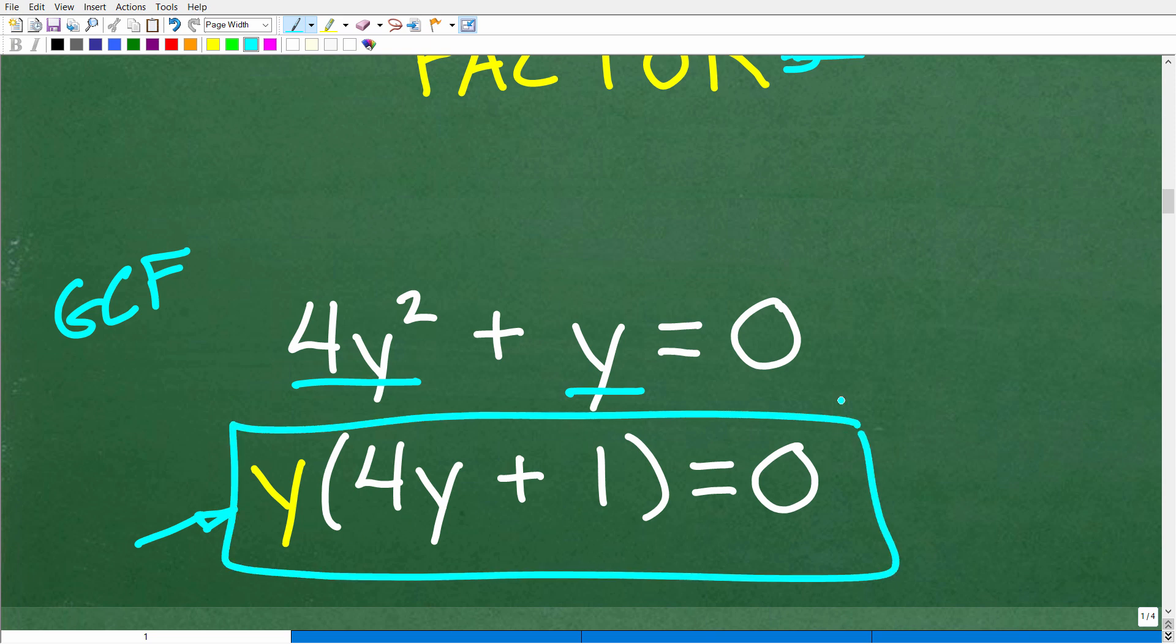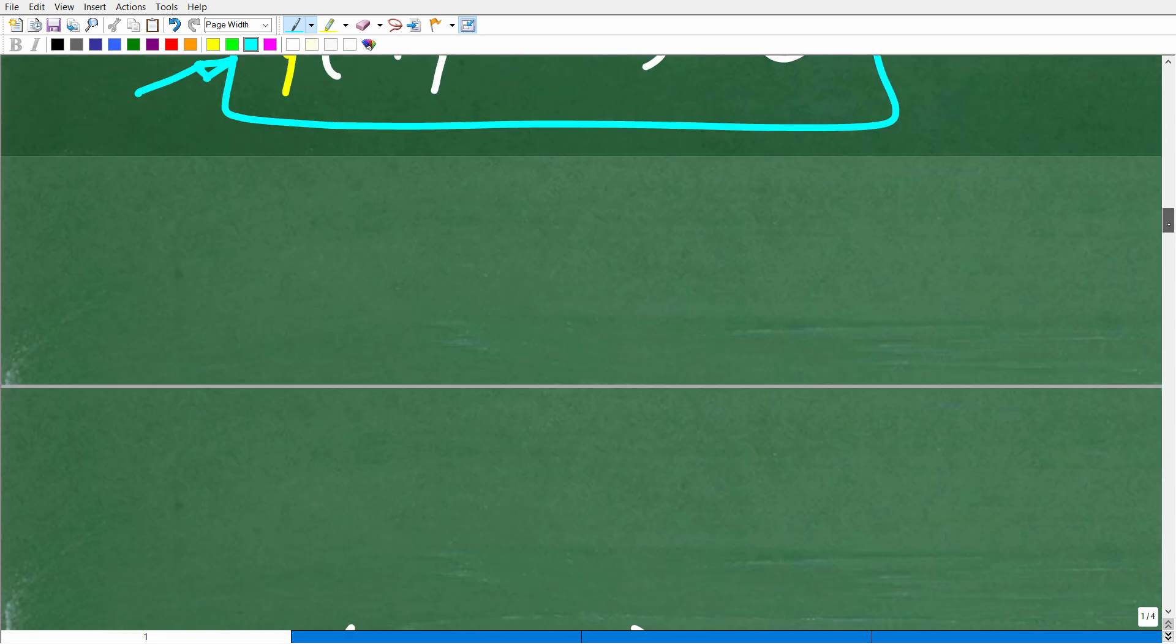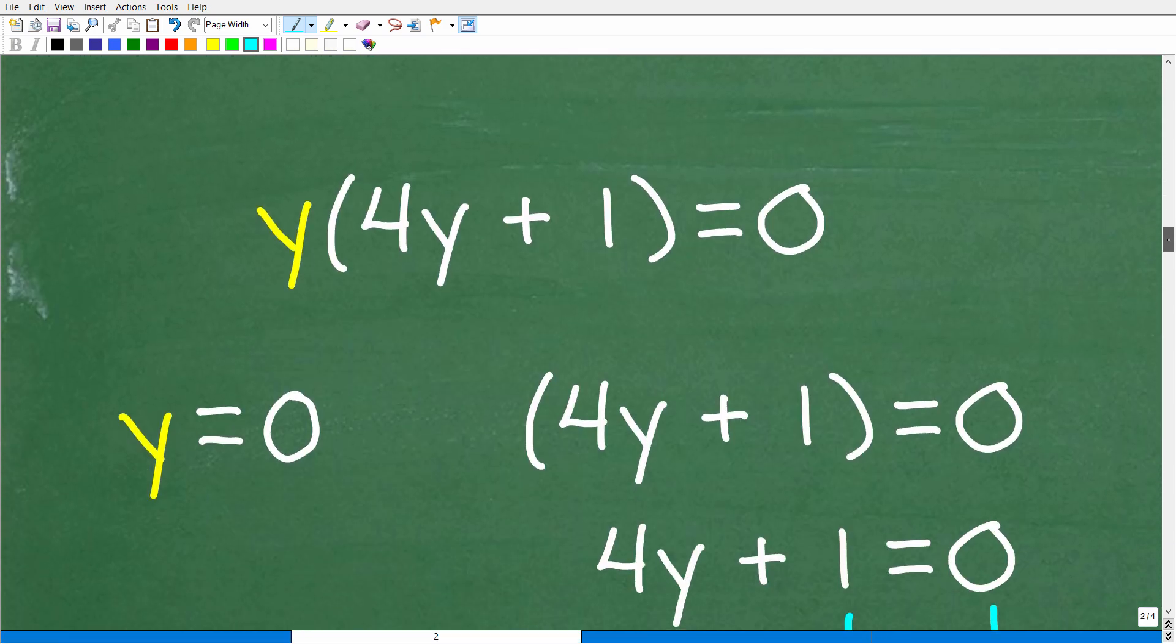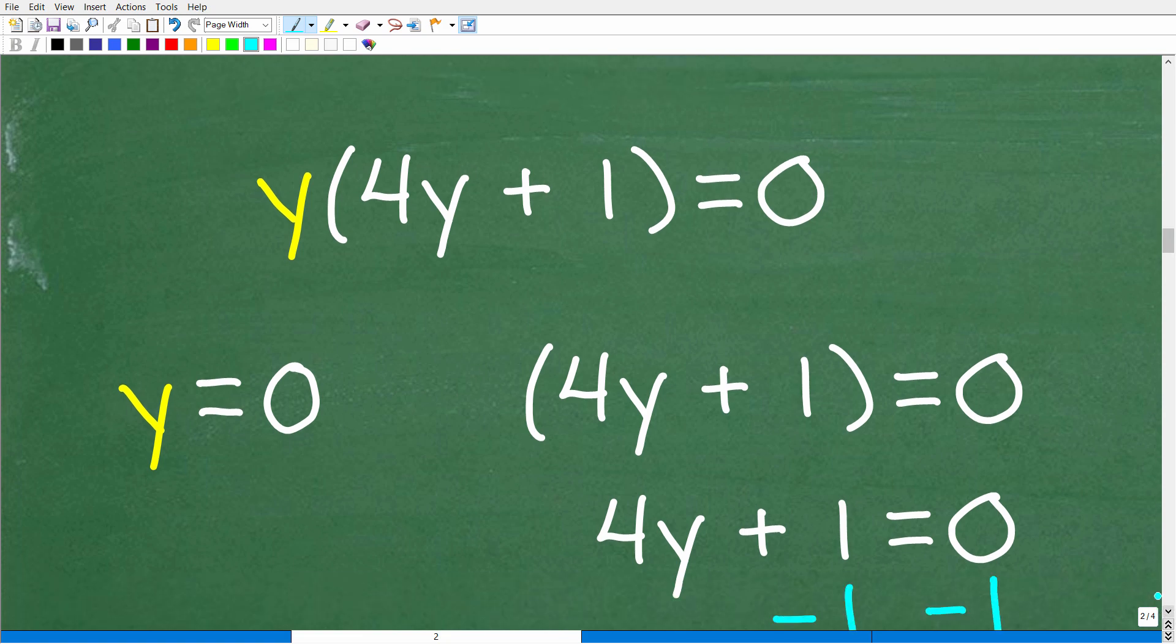All right. So how can we solve this? Well, this is going to be very easy because we're going to use a concept called the zero product property. All right. Now, that's just kind of a fancy term for common sense. And I'm going to explain myself in just one second. All right. So we factored this polynomial.